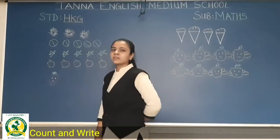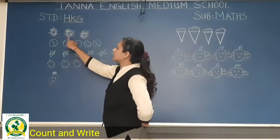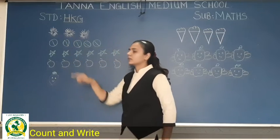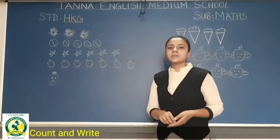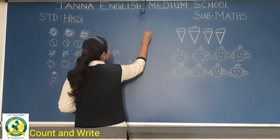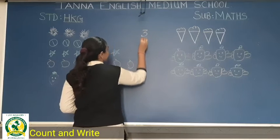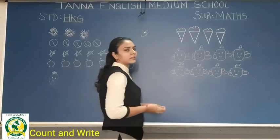How many flowers have we got? One, two, three. Three flowers. So right down here, three in the box you have to write. Three.